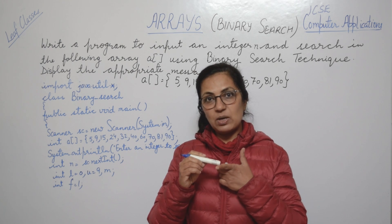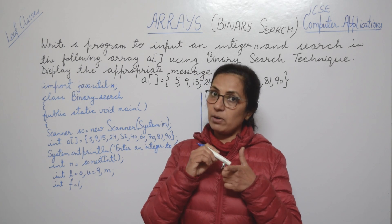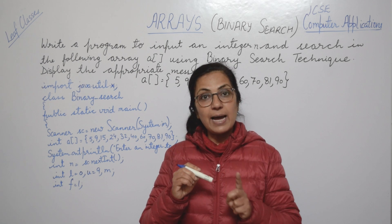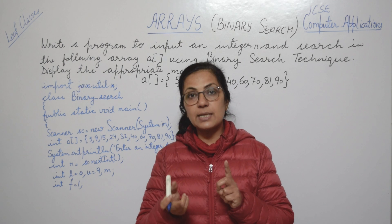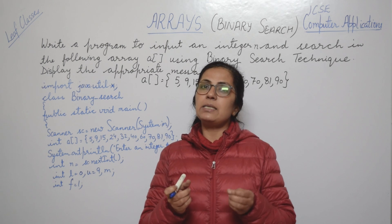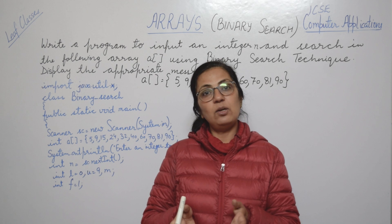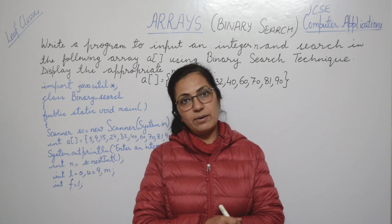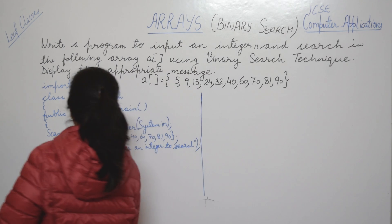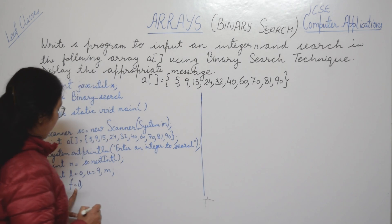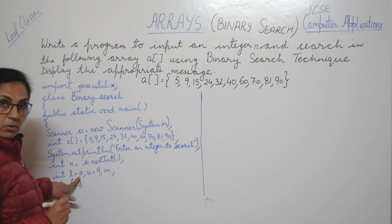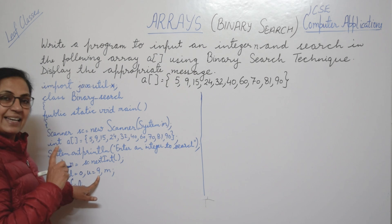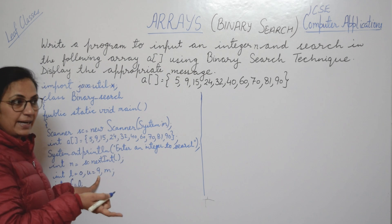We require four variables: one for lower limit, one for upper limit, one for mid value, and one flag variable. The flag works as an indicator — if we get the value we will set flag to 1, otherwise it remains 0. We take variable f for flag, l = 0 (lower limit), u = 9 (final index number).